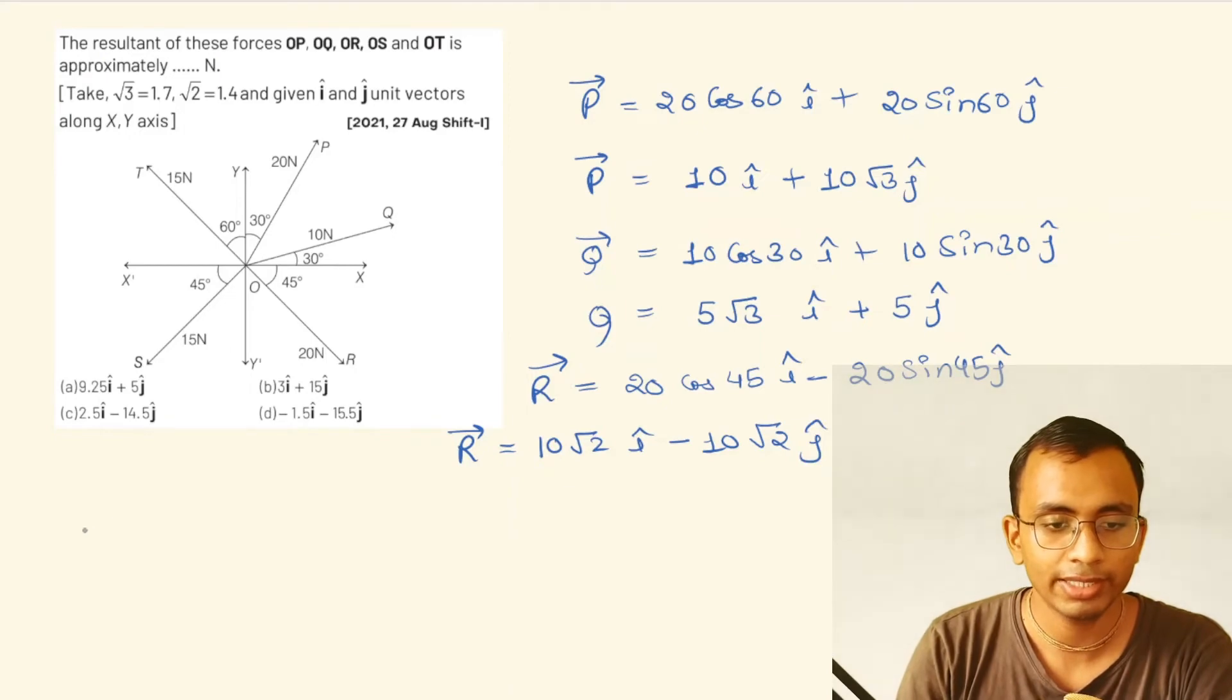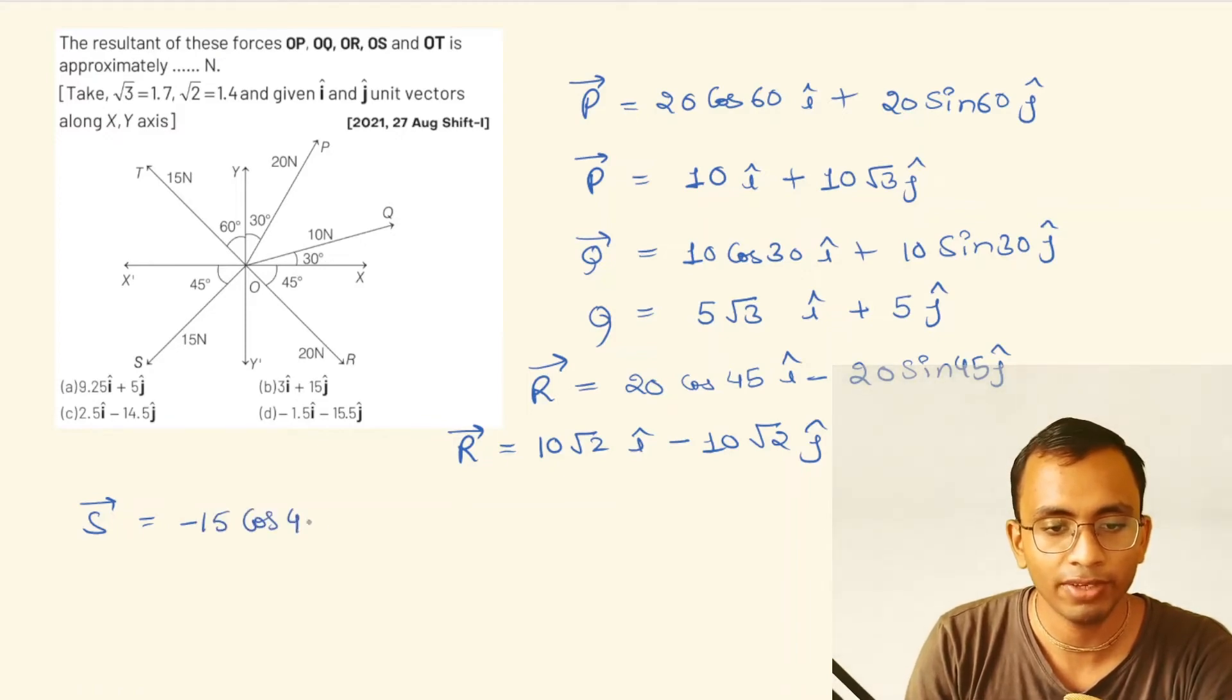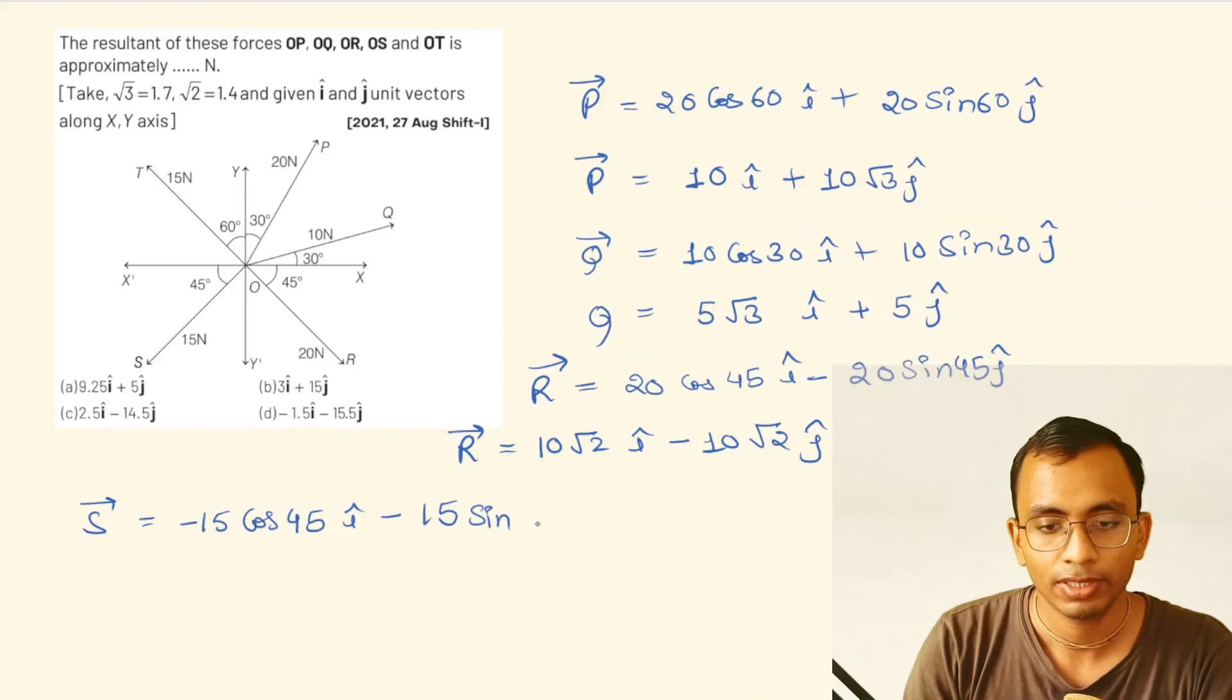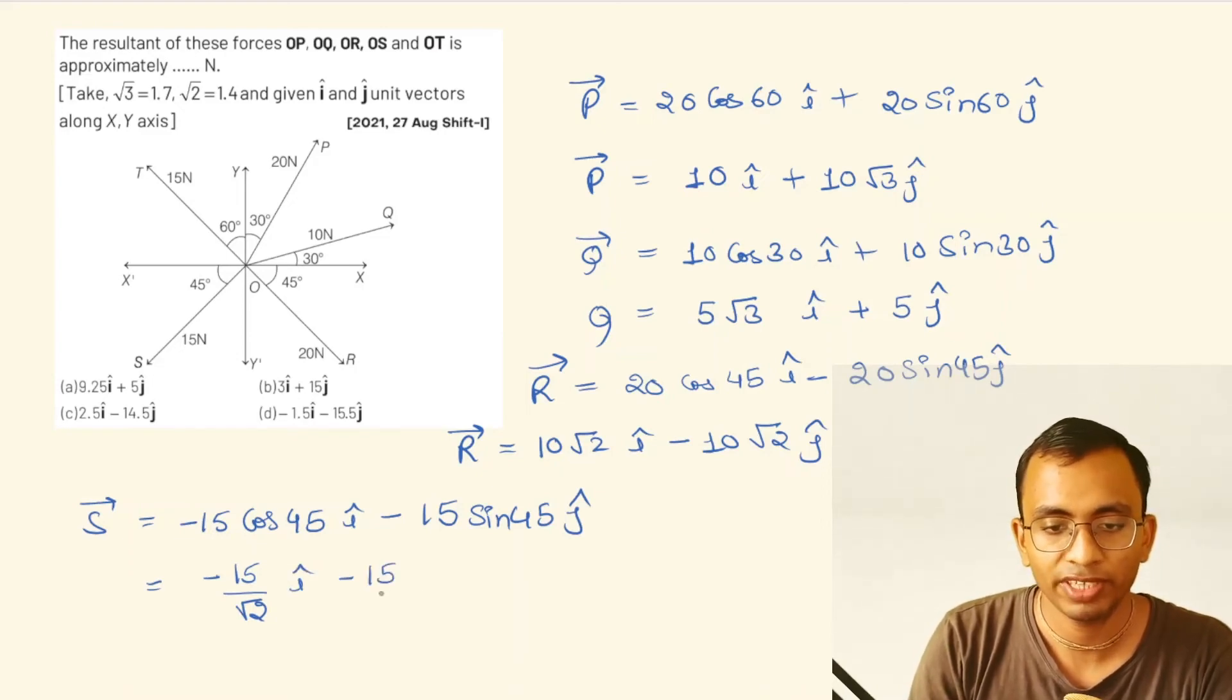Now vector S. Its magnitude is 15 and it makes 45 degrees with the negative x-axis. So it is -15 cos 45° î - 15 sin 45° ĵ. This becomes -15/√2 î - 15/√2 ĵ.